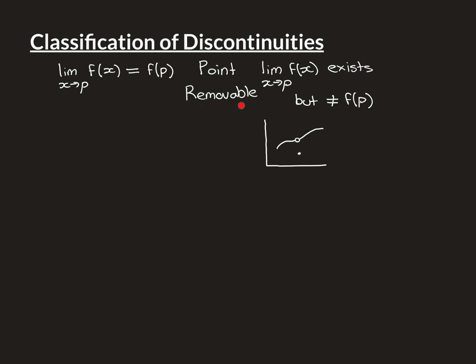Another name for this type is a removable discontinuity. The reason it's called that is because you can fix the function and make it continuous at P simply by redefining the value of the function at P to equal the limit as x approaches P. So you can remove the discontinuity very simply.